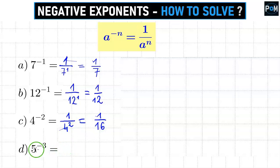In example d, we also draw a fraction bar. In the numerator, we put 1, and in the denominator, we put 5 to the power of 3, which is what we had here, but without the minus. 5 to the power of 3 is 5 times 5, which is 25, and another times 5 gives the result 125.